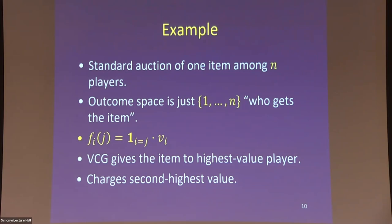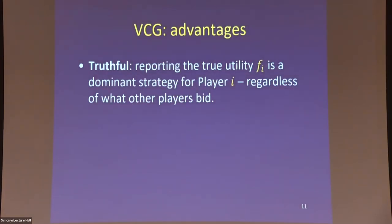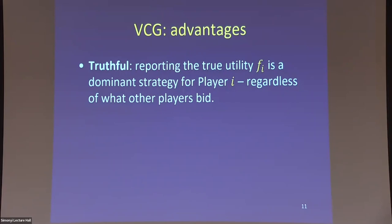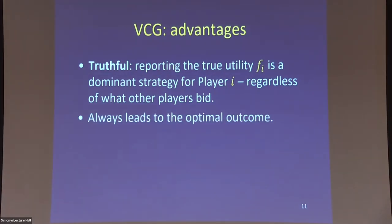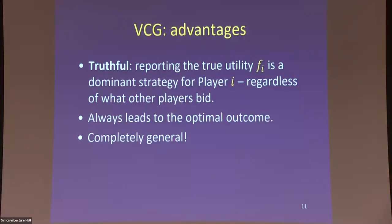In the second-price auction, if you trust the setup, there is no reason to misrepresent your utility. VCG is always truthful: reporting the true utility f_i is a dominant strategy for player i regardless of what everyone else bids. You can't get a better outcome by reporting some f_i-tilde instead of f_i. It always leads to the optimal outcome, and it's completely general — no convexity assumptions needed, as long as you can solve the maximization problem.